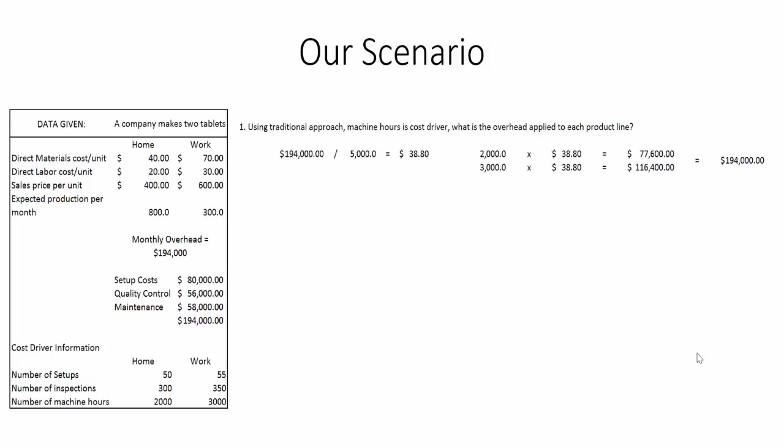To apply overhead to the two product lines, we take 2,000 machine hours for the home tablet and multiply by the rate of $38.80. That gives us $77,600 of that $194,000 applied to the home tablet. Then we take 3,000 hours multiplied by the rate and get $116,400 applied to the work tablet.